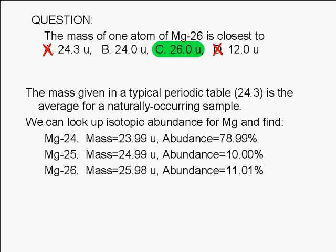Magnesium-26 has a mass of 25.98 atomic mass units and a relative abundance of about 11%.